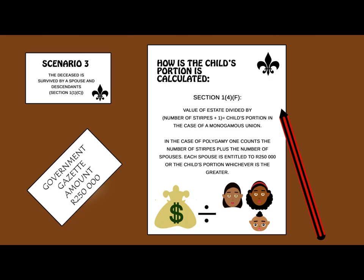Section 1(4) of the Intestate Succession Act sets out how to calculate the child's portion. A child's portion is calculated by taking the value of the estate divided by the number of stirpes plus the spouse. This will give you the child's portion in terms of a monogamous union. In the case of polygamy, one counts the number of stirpes plus the number of spouses. Each spouse is entitled to R250,000 or the child's portion, whichever is greater.